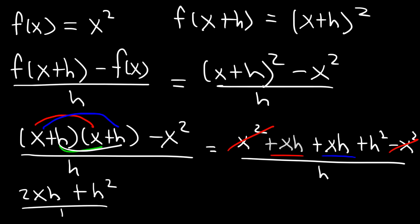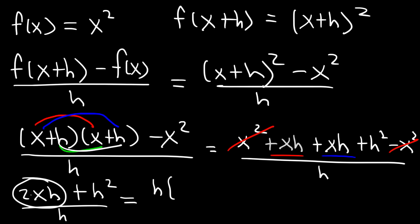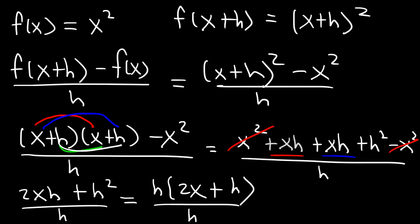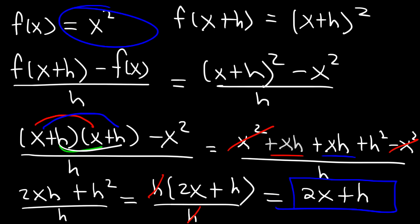Divided by h. Now because both terms in the numerator contain an h, we want to factor out the greatest common factor. Taking h out from 2xh leaves 2x, and taking h out from h squared leaves 1h. So we can cancel h over h, and the difference quotient is 2x plus h. That's the difference quotient of x squared: it's 2x plus h.